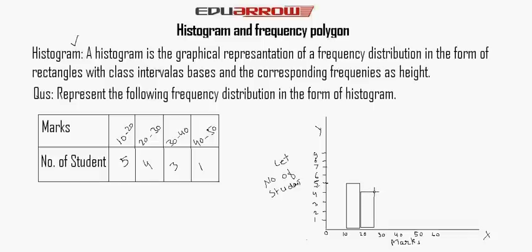30 to 40. There are only three students who belong to between 30 to 40. So it comes from 3.